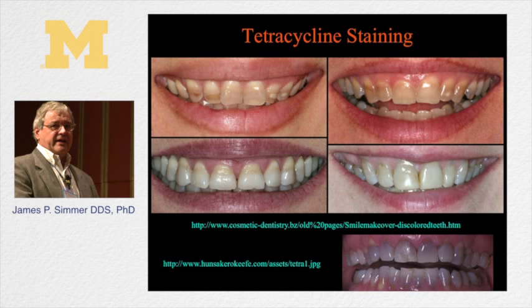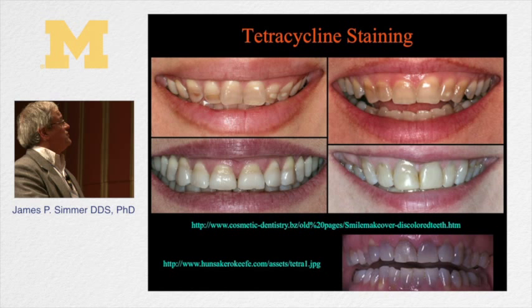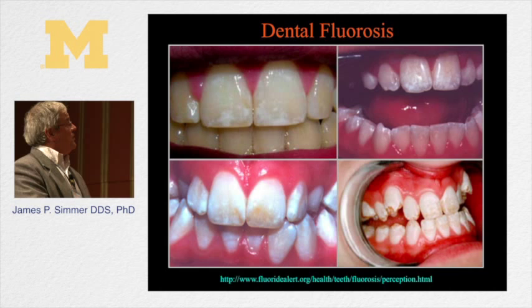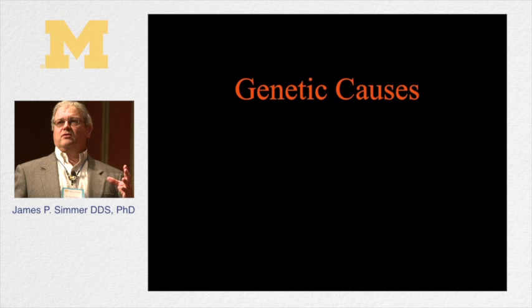Tetracycline, again, isn't going to run in the family. In the case shown, the tetracycline was apparently used throughout the time these permanent teeth were forming, so you can get different patterns of tetracycline staining in different people. Here are different cases of fluorosis. I'm basically going to leave this part on environmental causes — they don't run in the family, and you can probably figure out what the problem is in those instances.